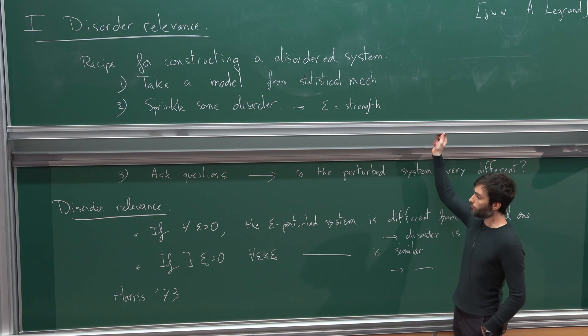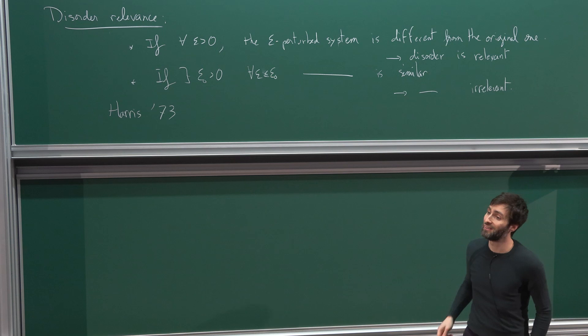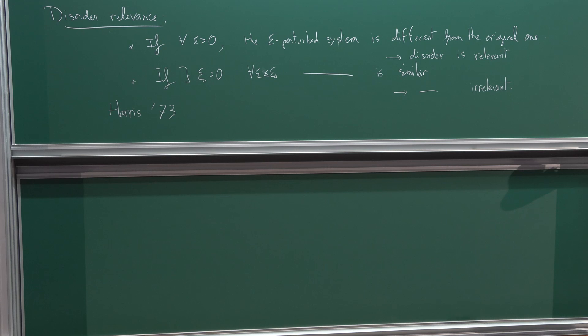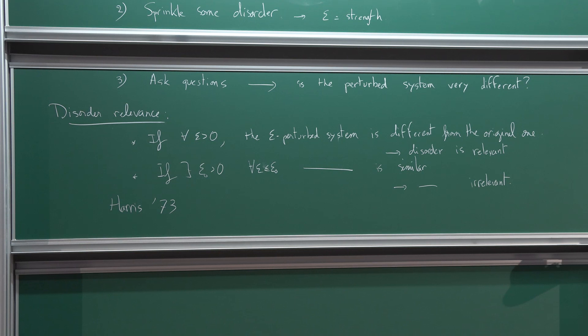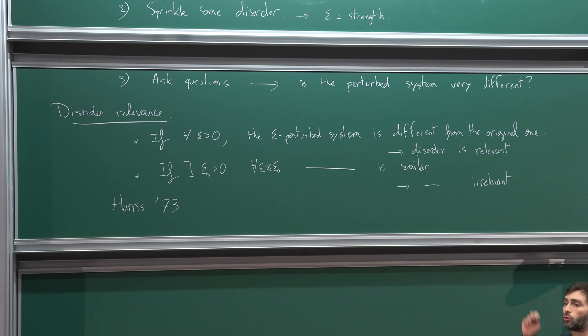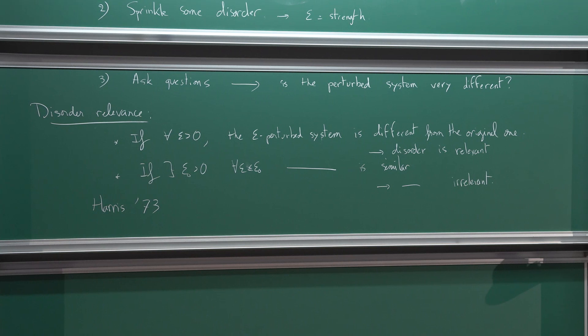How do you define the property that the system is different? Well, you can think about that as system-by-system, but usually what I didn't say in the recipe is: take a model with a phase transition and see whether the phase transition has the same characteristics — for instance, the same critical exponents.